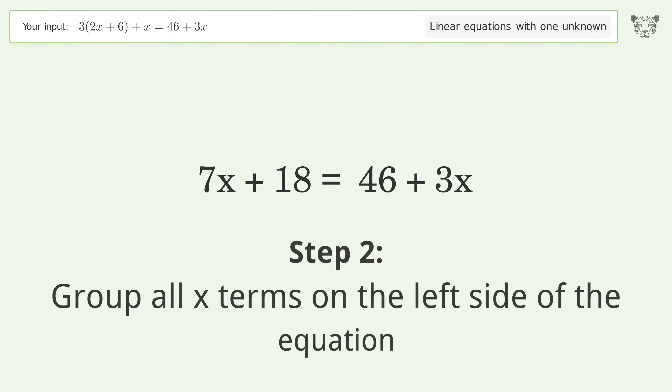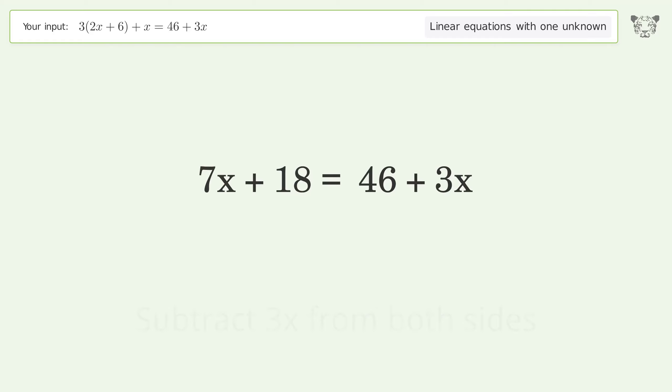Group all x terms on the left side of the equation. Subtract 3x from both sides. Group like terms. Simplify the arithmetic.